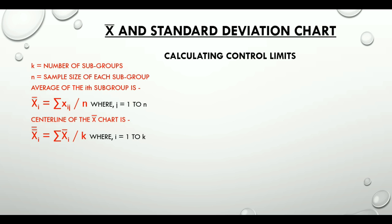Range of the ith subgroup is Sᵢ, and center line of the S chart, S-bar, equals the summation of Sᵢ divided by k, where i can take values from 1 to k. So this was what we required to calculate the control limits.